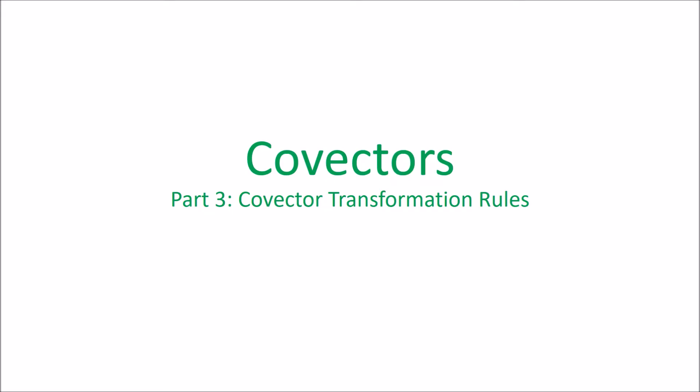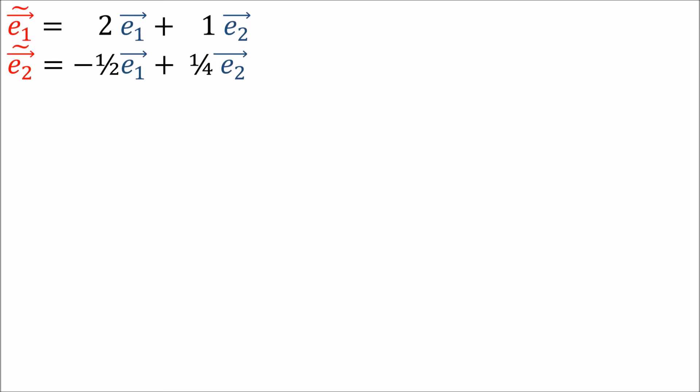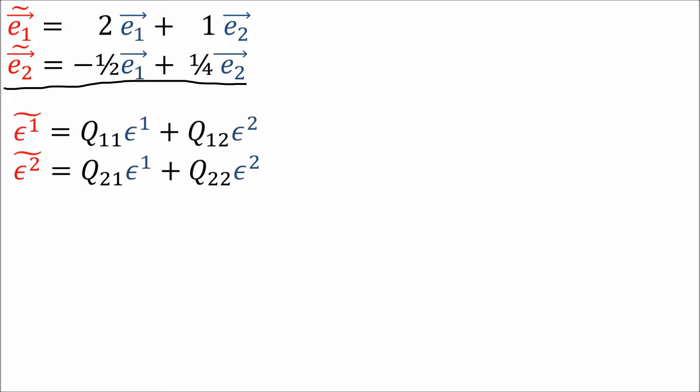The first thing we need to figure out is how co-vectors themselves transform — not co-vector components (the alphas), but the co-vectors themselves, which are the epsilons. With vectors, to get from the old basis to the new basis, we build the new basis vectors out of the old basis vectors — that was our forward transform. Now we want to do the same thing with co-vectors: how can we build the new dual basis out of the old dual basis? What are the Q coefficients that let us do this?